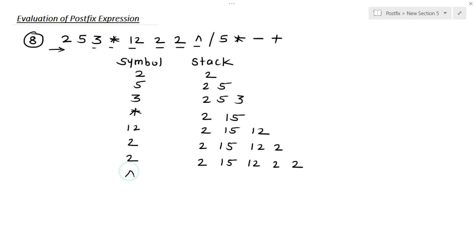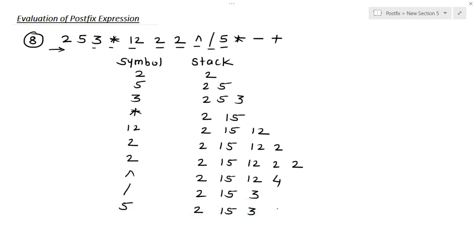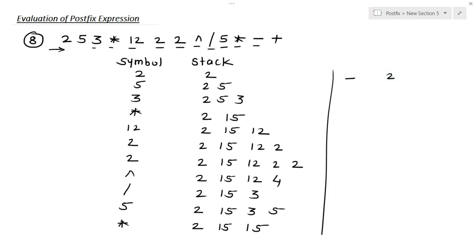The next symbol is exponential. At the top of the stack are 2 and 2, so 2 to the power of 2 equals 4. Next is division: top of the stack are 12 and 4, so 12 divided by 4 equals 3. The next symbol is 5; the stack has 2, 15, 3, and 5. Then multiplication: 3 multiplied by 5 equals 15; the stack has 2 and 15. Then minus: 15 minus 15 equals 0. Then plus: we have only 2 operands left — 2 and 0 — so 2 plus 0 equals 2. This is our final result for this postfix expression.